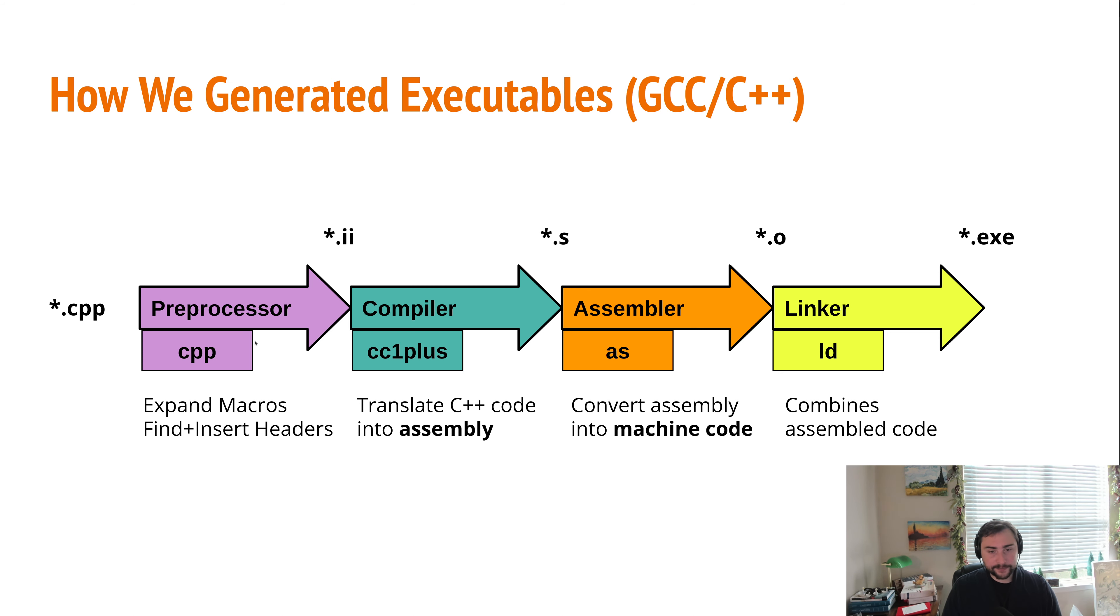We go through preprocessing to do things like expand macros and get headers. Then our compiler, like CC1+, will translate that into the low-level assembly. Then our assembler will translate that into our machine code. And then our linker will combine all of these pieces of object code into an executable. And then we have our executable on the other side.